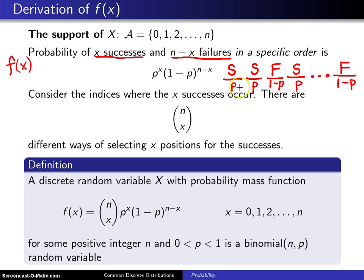If you lay them out in a specific order like this, there will be p raised to the x power and 1 minus p raised to the n minus x power multiplied together as the probability of this particular string of successes and failures.